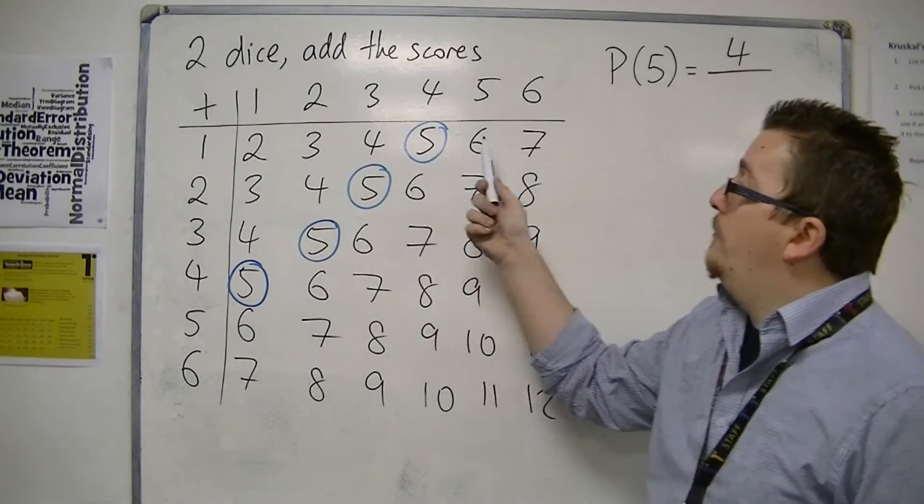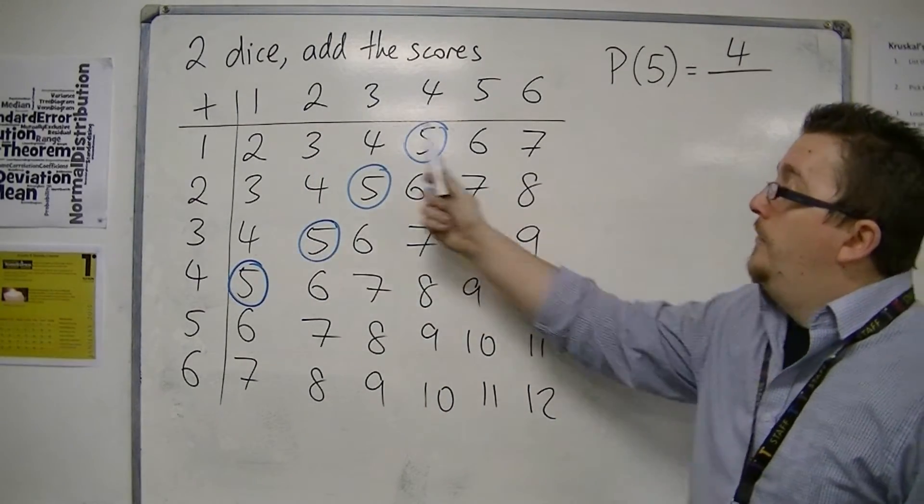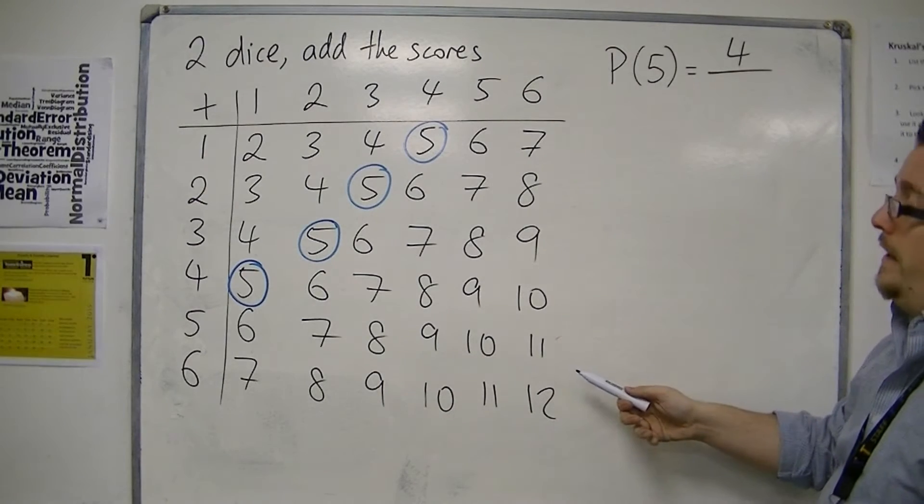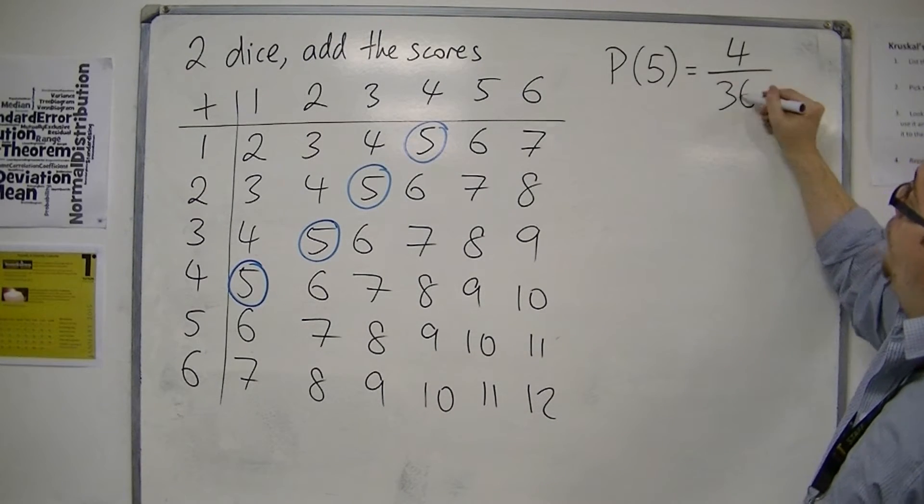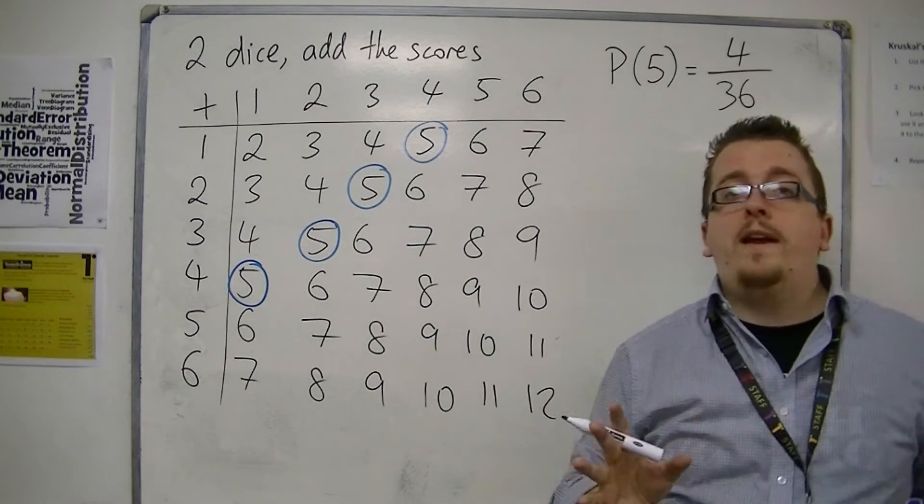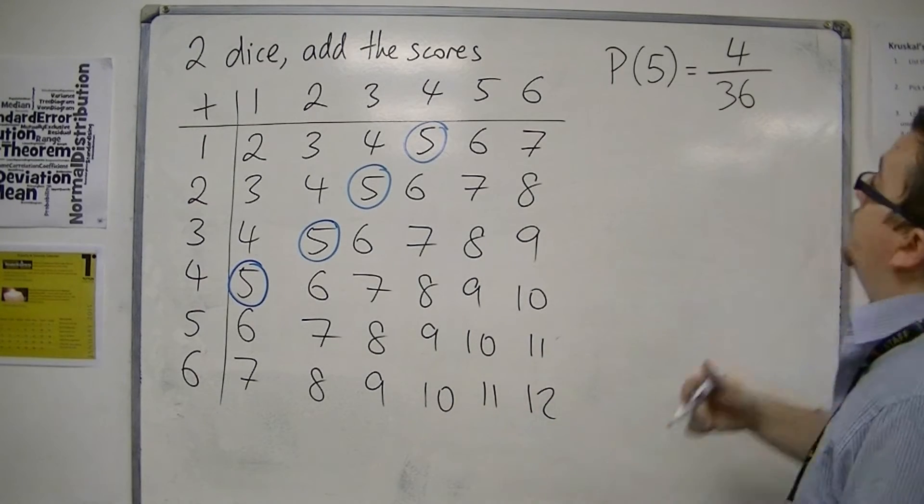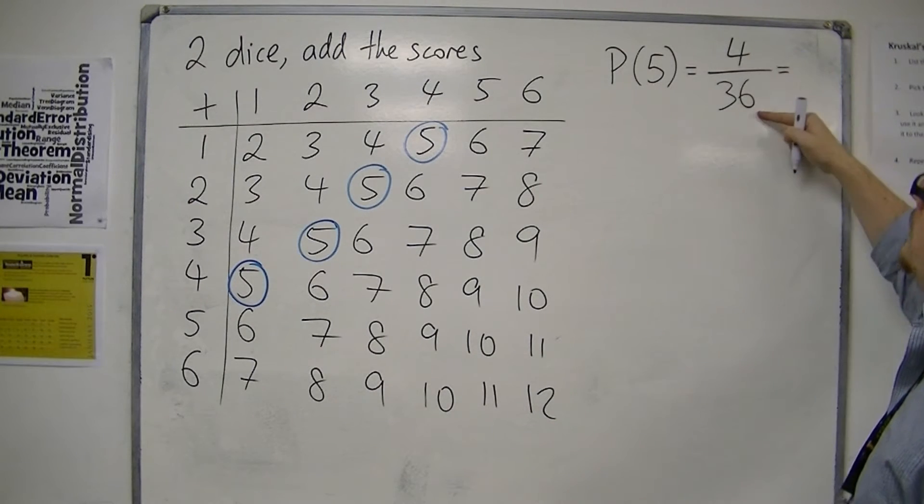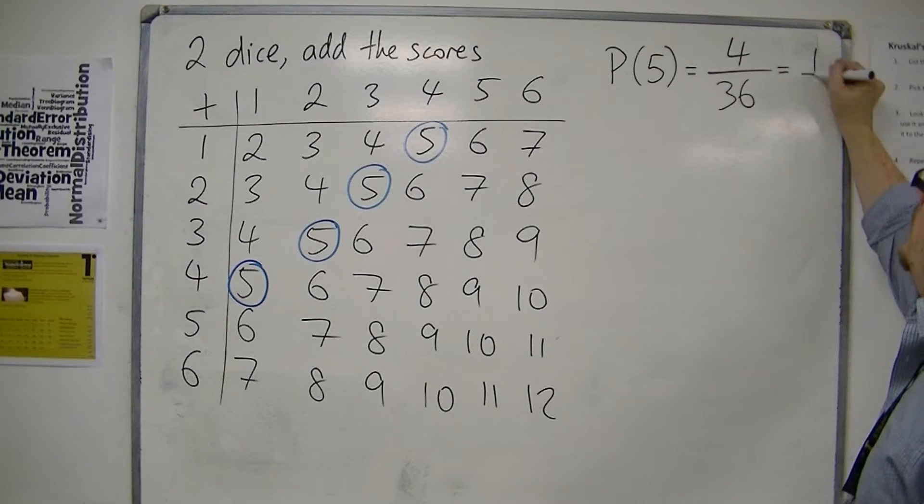So the probability of scoring a five is that there are four possibilities out of all of these. We have six by six, so thirty-six. So there's actually four out of thirty-six ways to get a five. That could be simplified down, which gets you to one-ninth.